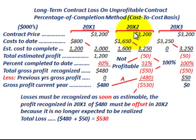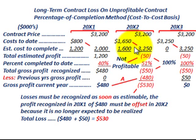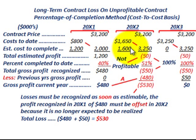Moving to year 20x2, we have the same contract price, but our costs to date plus estimated cost to complete are now far greater than originally budgeted. Cost to date is $1,650K and estimated cost to complete is $1,600K, so total costs are $3,250K. Comparing that to our contract price of $3,200K, we're going to have a $50K loss.